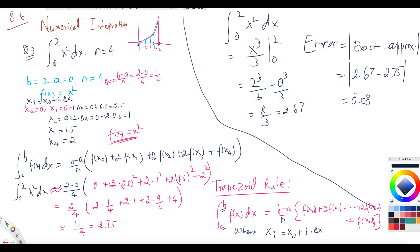The error = exact value − approximated value = 2.67 − 2.75, so the error is about 0.08. If you increase the number of trapezoids — for example to 40 — you create smaller trapezoids and get more terms, and the approximated value will get closer to 2.67. Increasing the number of terms reduces the error.